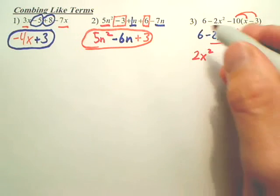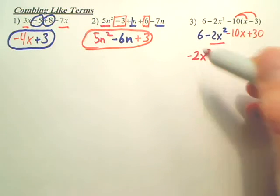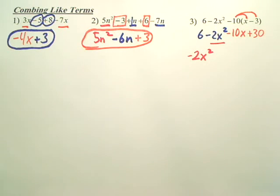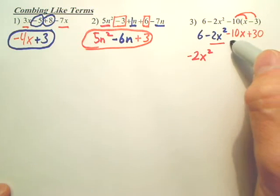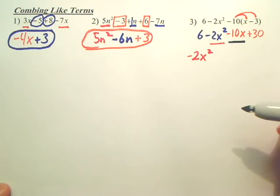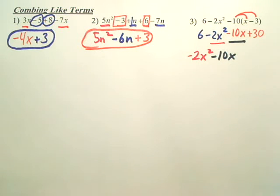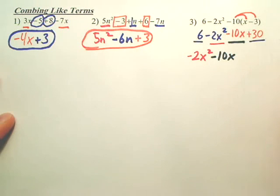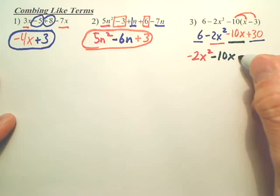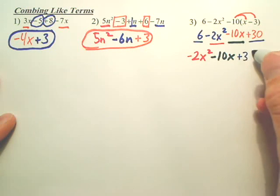That is a negative, right? This is a negative 10 X. Any X's to combine with that? No. So that's just negative 10 X. Lastly, we have two numbers, a 6 and a 30. Those combined to give us? 36.